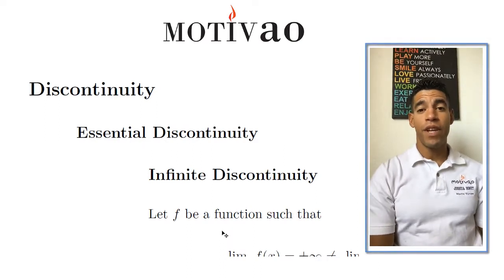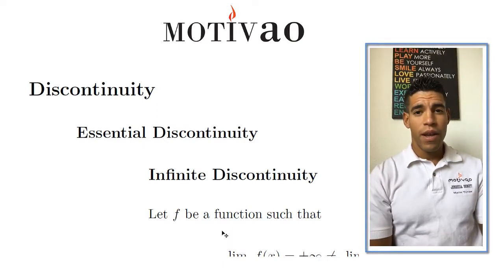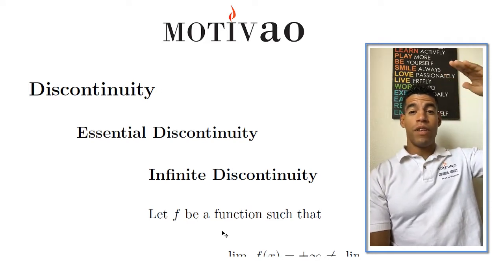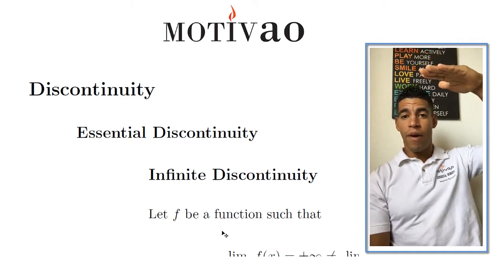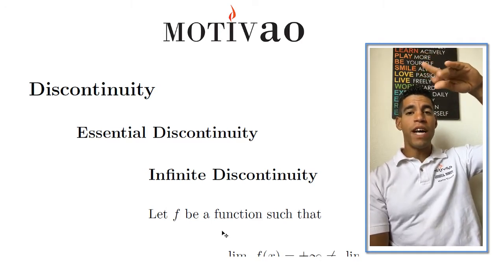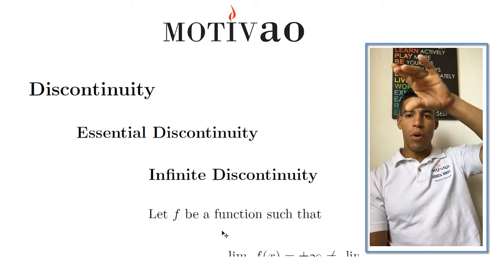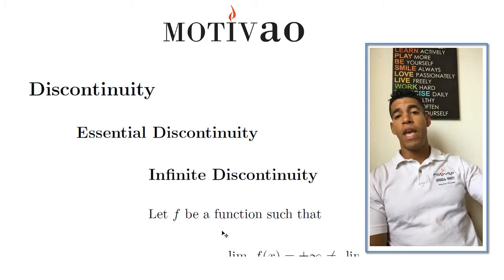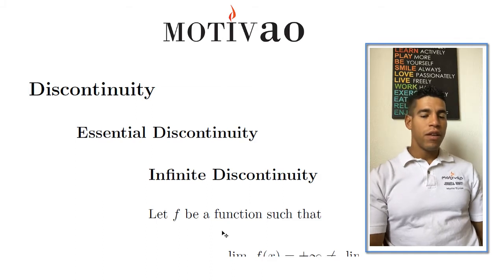Today we're going to finish the topic on discontinuity. Let's do a quick review: discontinuity starts at the highest level and divides into two topics — essential and removable. Under essential, we have two more: jump discontinuity and infinite discontinuity.